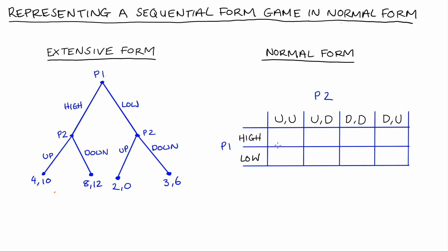If Player 1 plays high and Player 2 plays UU (up if high, up if low), Player 1 has played high and Player 2's strategy is to respond to high by playing up, so the payoffs are 4, 10. If Player 1 plays high and Player 2 plays UD (up if high, down if low), the outcome is again at that same terminal node — Player 1 played high and Player 2 responds to high by playing up — so the payoffs are again 4, 10.